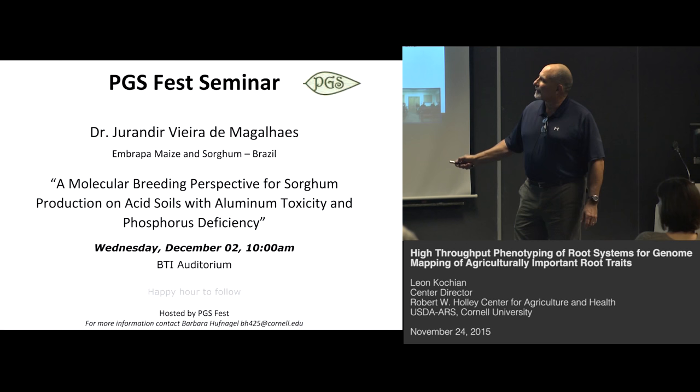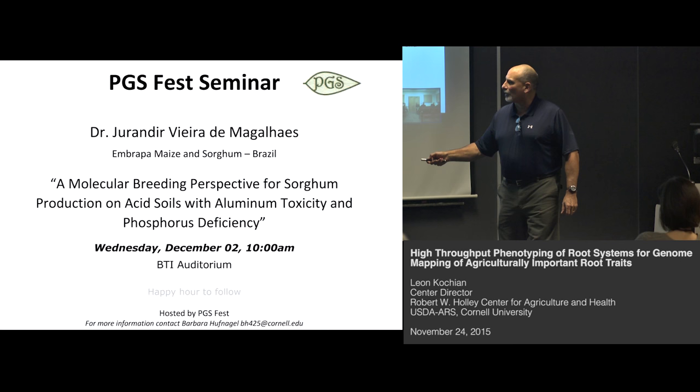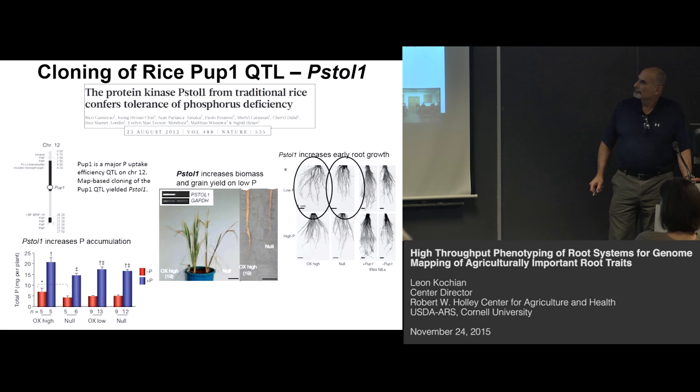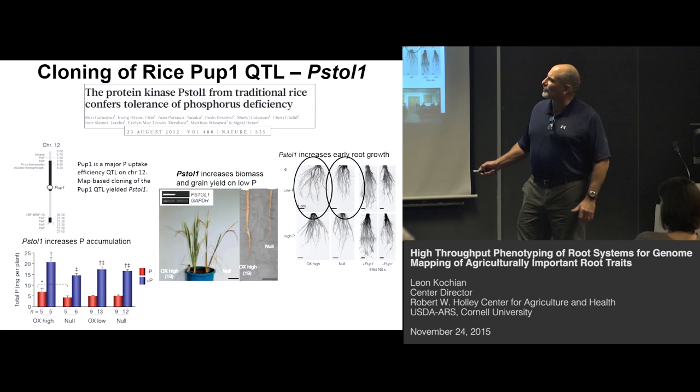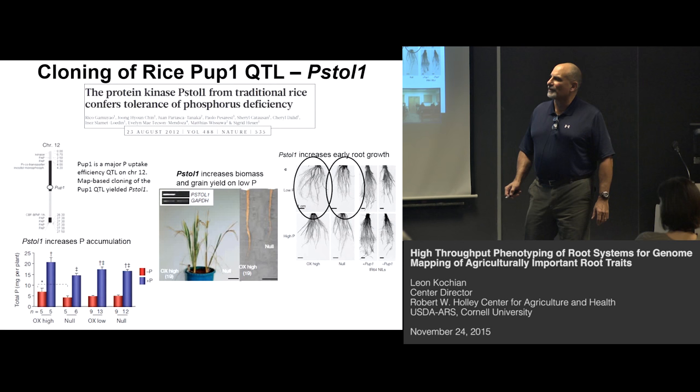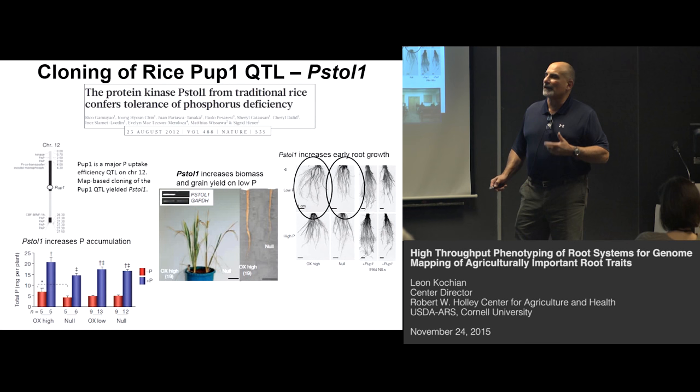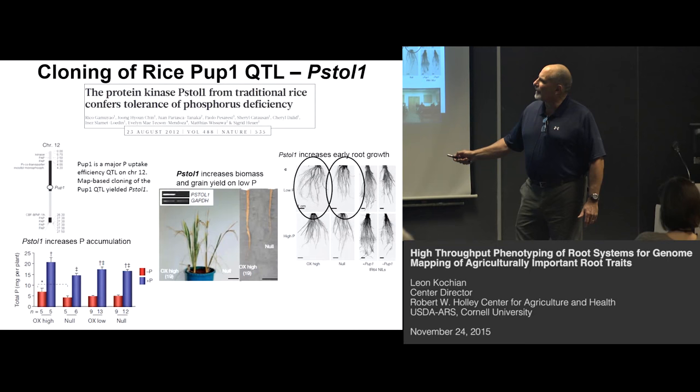Juringer will be talking about the sorghum work on acid soils — aluminum toxicity and phosphorus deficiency. We're interested in phosphorus efficiency. Collaborators Sigrid Hoyer and Matthias Wissuwa at JIRCAS in Japan had identified a major phosphorus uptake efficiency QTL on chromosome 12 about 10 years ago. After eight years of map-based cloning, the gene underlying this QTL turned out to be a receptor kinase they call PSTOL1 for phosphorus starvation tolerance. Expressing the superior allele in near-isogenic lines increases phosphorus uptake under low-P conditions and increases early root growth, enabling more phosphorus mining from the soil.